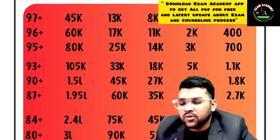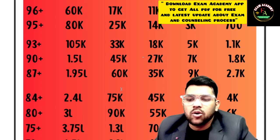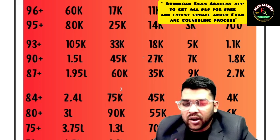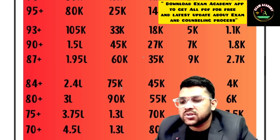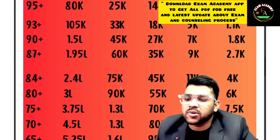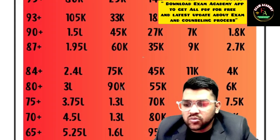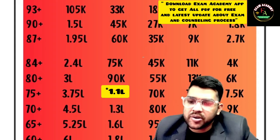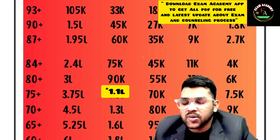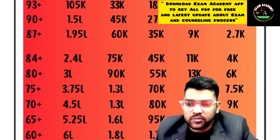For 87 percentile — General: 1.9 lakh, OBC: 60,000, EWS: 35,000, SC: 9,000, ST: 2,700. For 84 percentile — General: 2.4 lakh; for OBC, EWS, SC, ST check sidewise: 75,000, 45,000, 11,000, 4,000. For 83 percentile — General: 90,000 (around 2.9 lakh total), OBC: 55,000, EWS: 13,000, ST: 6,000. For 75 percentile — General: 3.75 lakh, OBC: 1.3 lakh, EWS: 70,000, SC: 15,000, ST: 7,500. Note: there is a typing mistake — for 75 it is 1.1 lakh, for 70 it is 1.3 lakh.